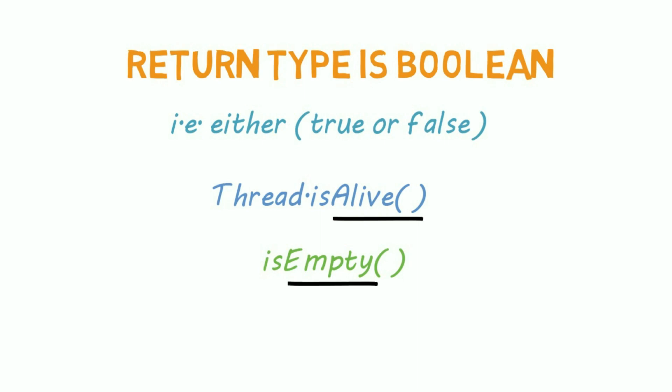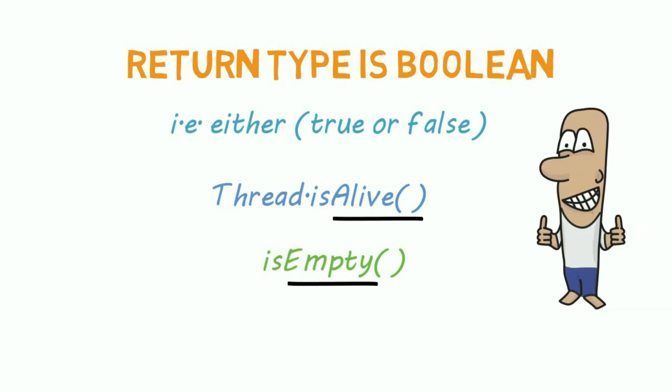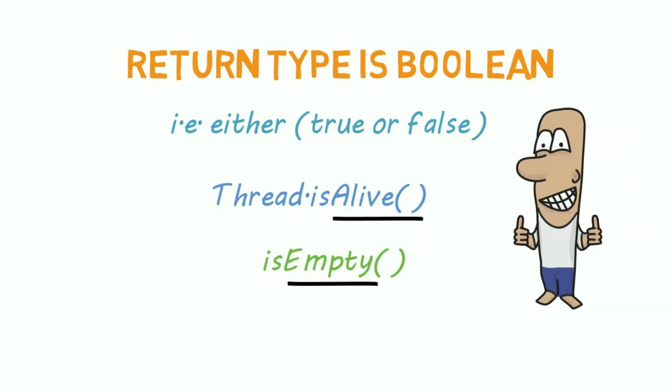If any method returns a boolean value, then use 'is' — for example, isAlive or isEmpty. So 'is' is followed by a noun or adjective. We'll learn about more coding conventions later.